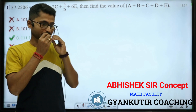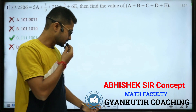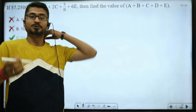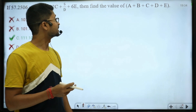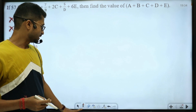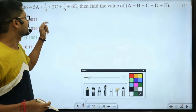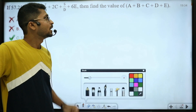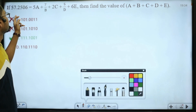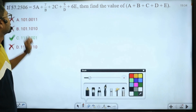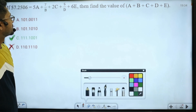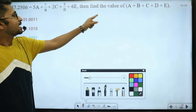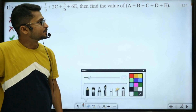Hello everyone. I am going to do some doubt questions and concept clarification. The question is: 57.2506 is equal to 5a plus 7 by b plus 2c plus 5 by d plus 6e. Find the value of a plus b plus c plus d plus e.